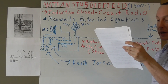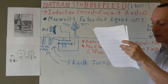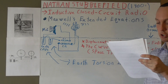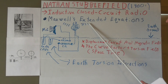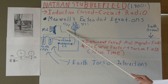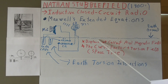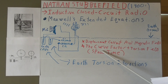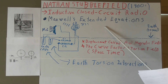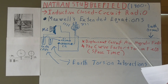If torsion fields were to exist, it is possible that their effects could be accounted for in the mathematical framework of Maxwell's extended equations, specifically through the curve factor. The curve factor is a modification of Maxwell's equations that accounts for the curvature of spacetime, which could potentially allow for the inclusion of torsion fields. So in summary, this is how the modified circuit would work — based on the displacement current, the magnetic fields, the curve factor, torsion fields, the curve factor relating to spacetime, and the Earth's torsion field reactions, taking Maxwell's extended equations into consideration.